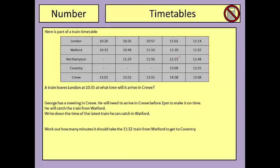This is part of a train timetable and it shows trains leaving at various times throughout the morning. The first train we can see leaves London at 10.20. It then calls into Watford station at 10.33. It doesn't stop at Northampton and it doesn't stop at Coventry, and then arrives into Crewe at 13.03.